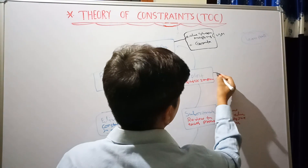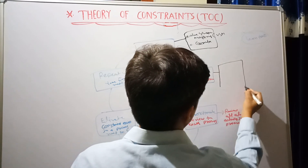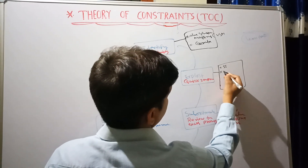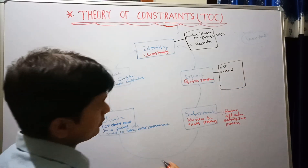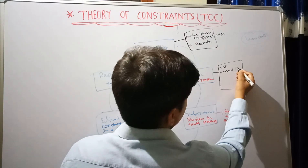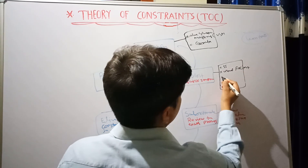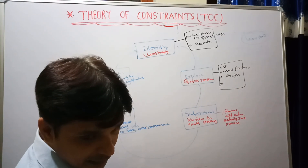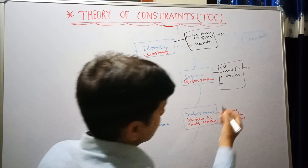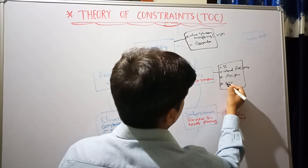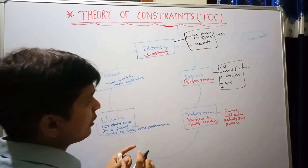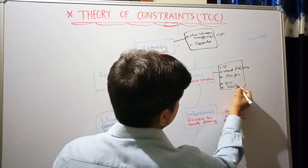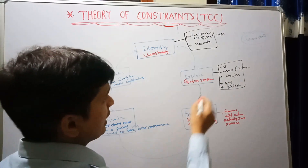For the Exploit step, you need different types of tools. The most important ones are 5S, Visual Factory, and Standardized Work. Kaizen — specifically small Kaizen — is also used for quick improvement in this step. These are the lean tools for the Exploit step.